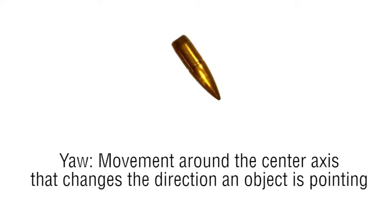This will cause the projectile to yaw and then tumble. This is what is commonly referred to as keyholing, as the bullet tumbling through the air will leave a keyhole shape on the target.